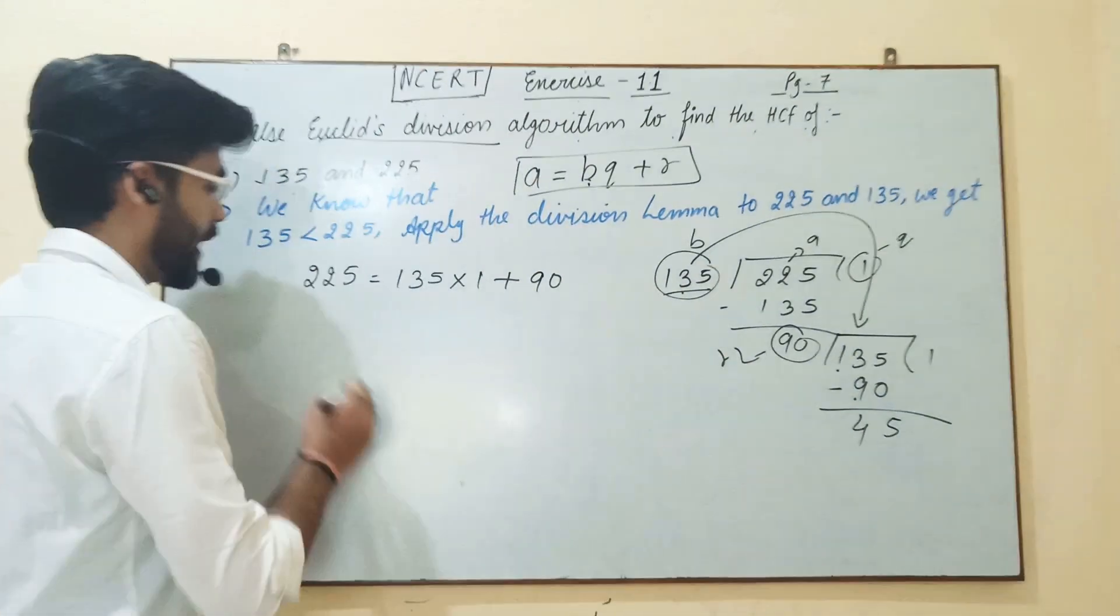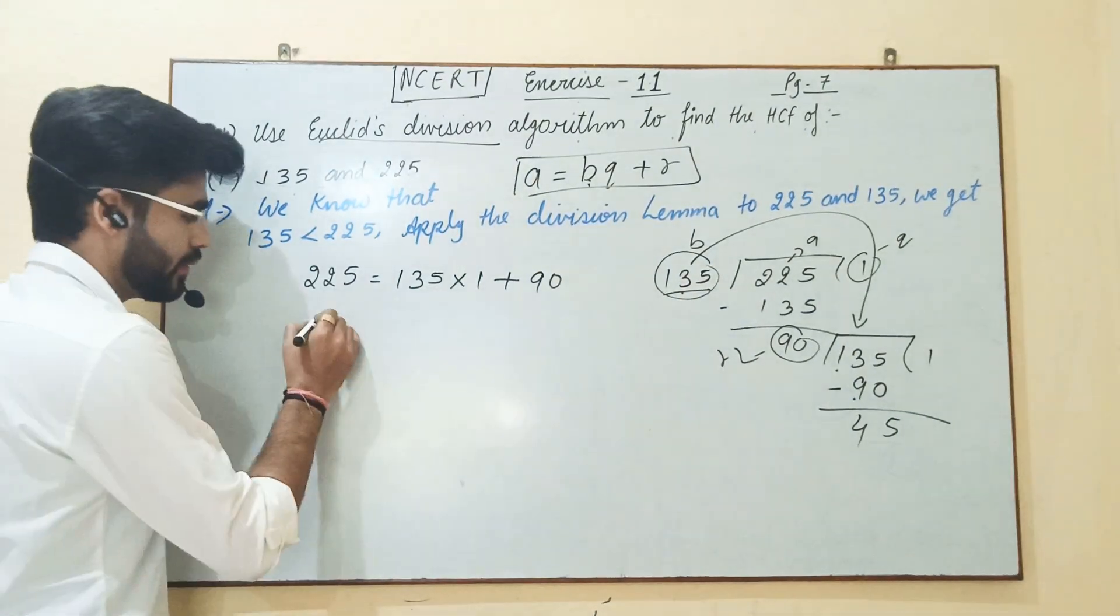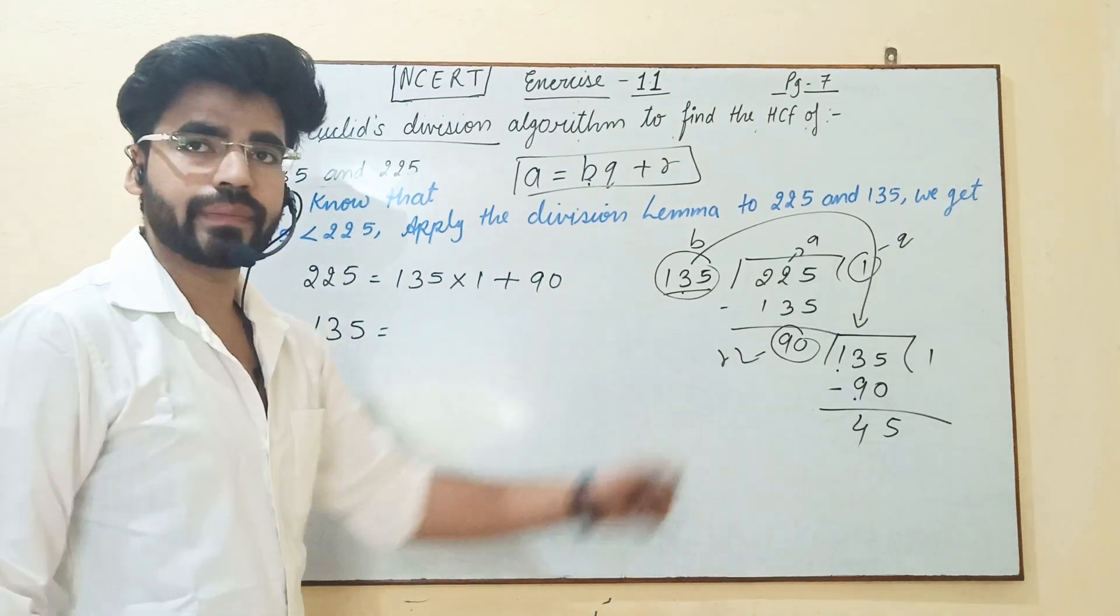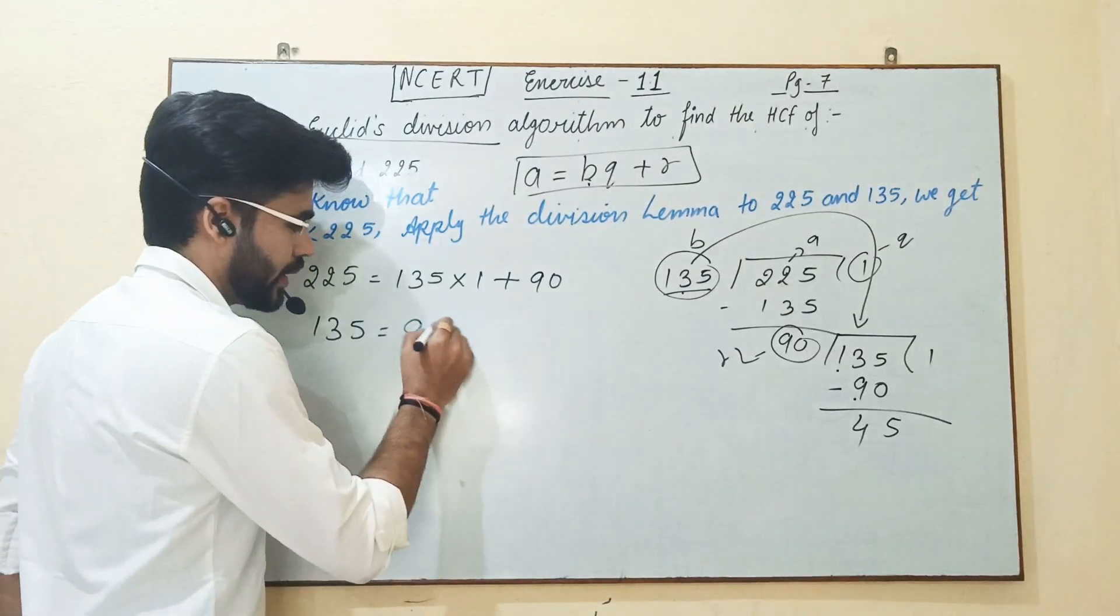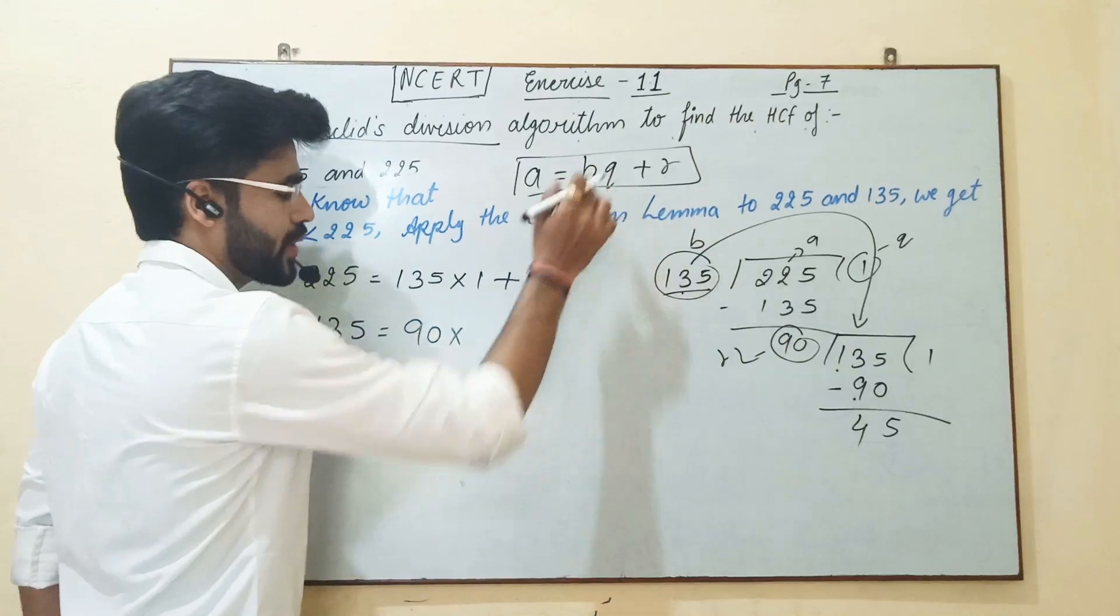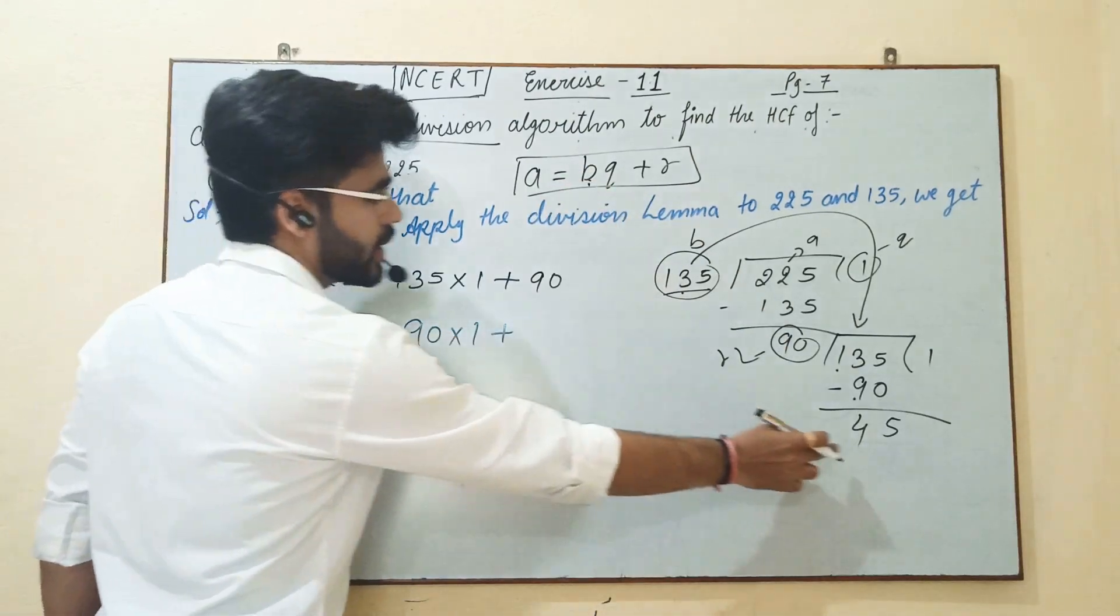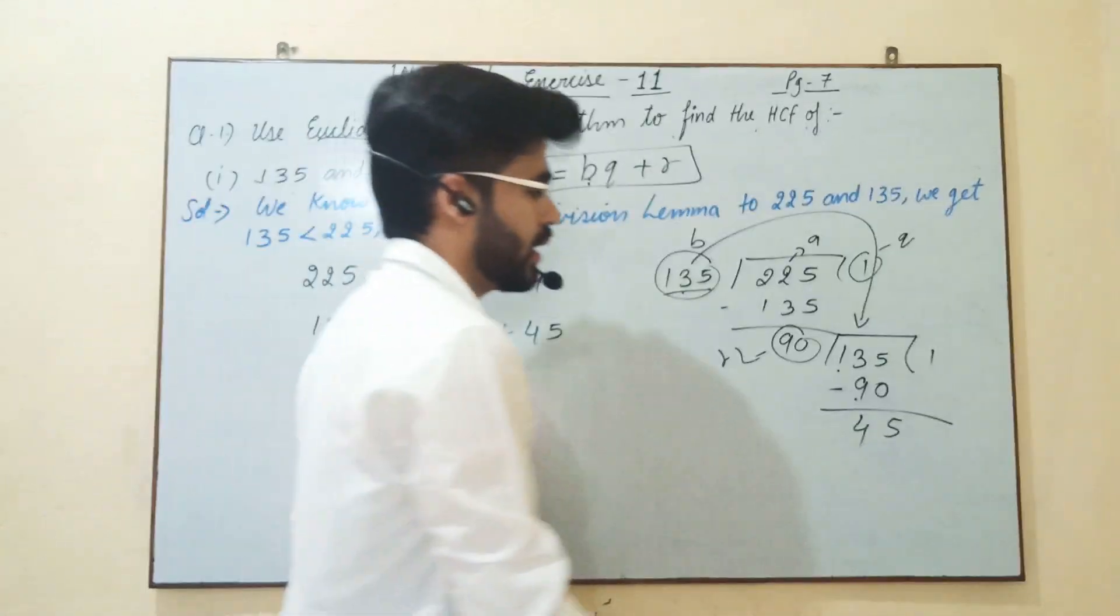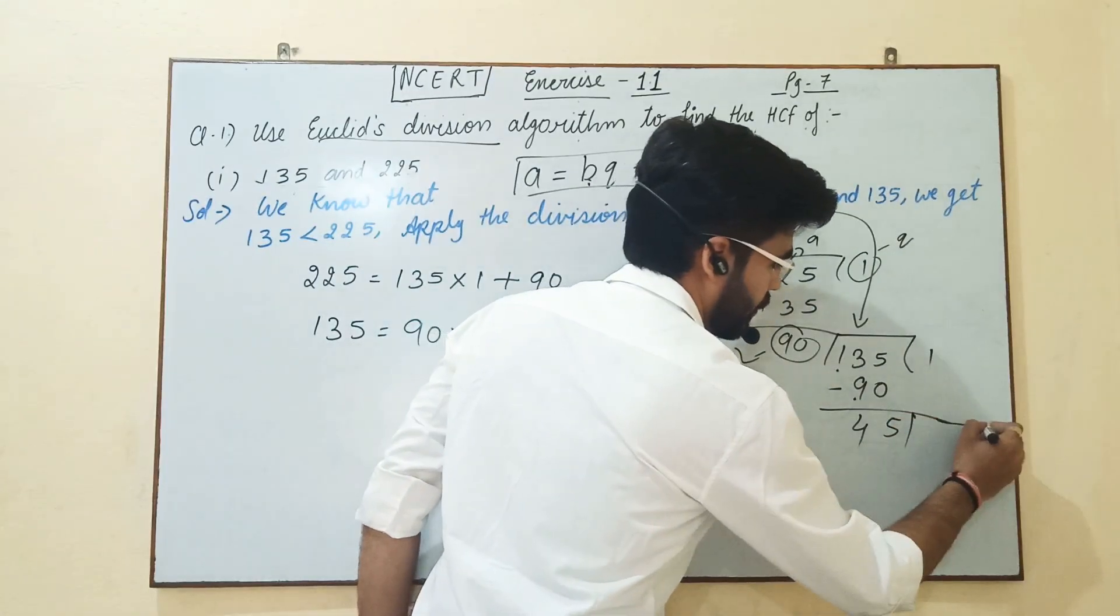Now again we have to write, we have to again process: 135 equals 90 into 1 - question is 1 - and the remainder here, the remainder is 45. Now let's proceed again, 45.